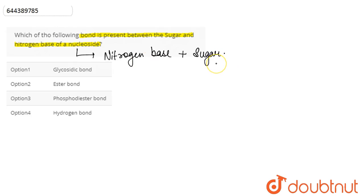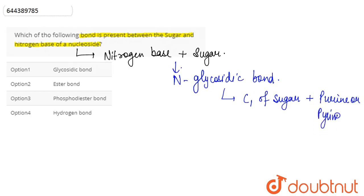There is N-glycosidic bond in the nucleoside which connects carbon number one of sugar with purine or the pyrimidine base. Purine or the pyrimidine base.